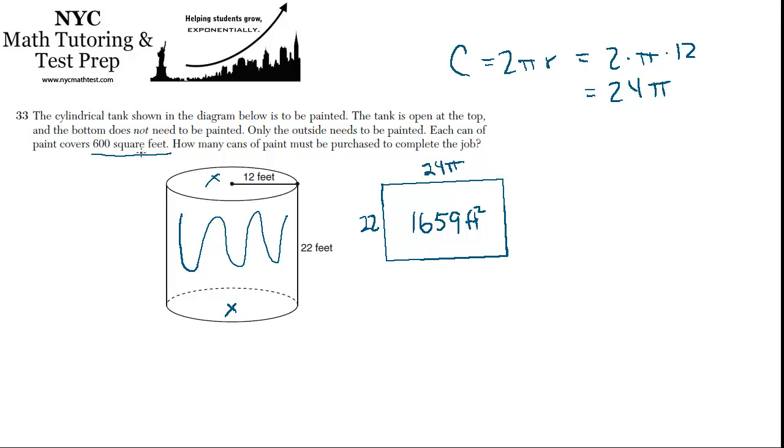And if each can of paint covers 600 square feet, how many cans do we need? Well, it's just 1659 divided by 600, which is 2.76.